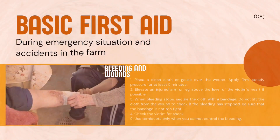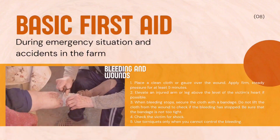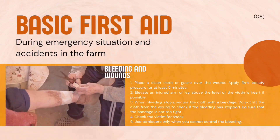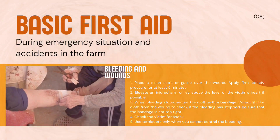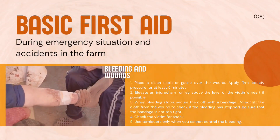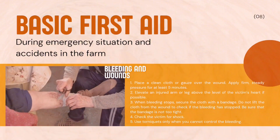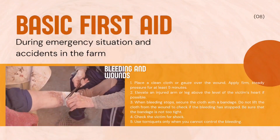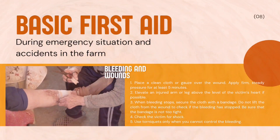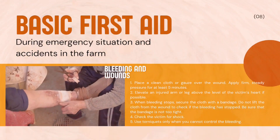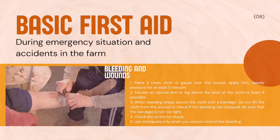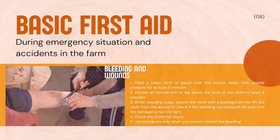2. Bleeding and wounds. 1. Place a clean cloth or gauze over the wound. Apply firm, steady pressure for at least 5 minutes. 2. Elevate an injured arm or leg above the level of the victim's heart if possible. 3. When bleeding stops, secure the cloth with a bandage. Do not lift the cloth from the wound to check if the bleeding has stopped. Be sure that the bandage is not too tight. 4. Check the victim for shock. 5. Use tourniquets only when you cannot control the bleeding.